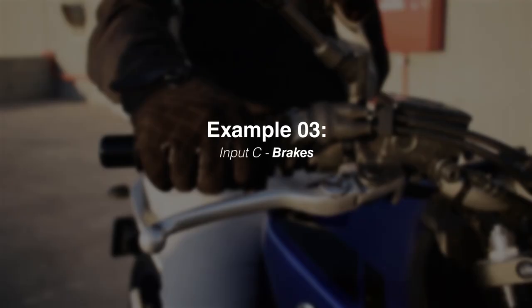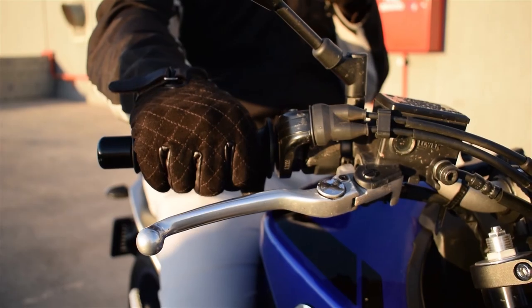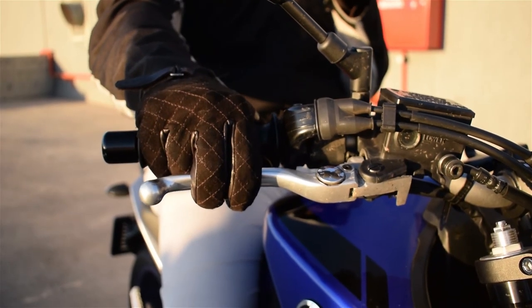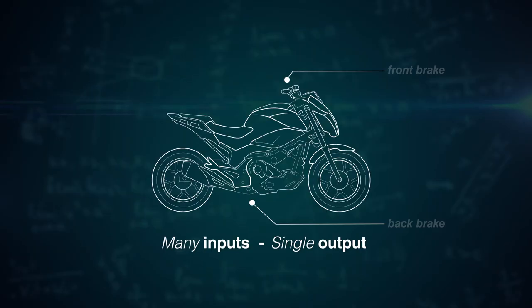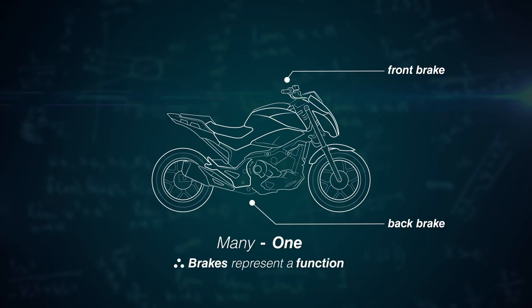Example 3. Input C. The brakes. When triggered, the output of the brakes, both front and back, have a single output. The bike stops. We again have a single output from many inputs, which means that this is a many-to-one relation and therefore represents a function again.